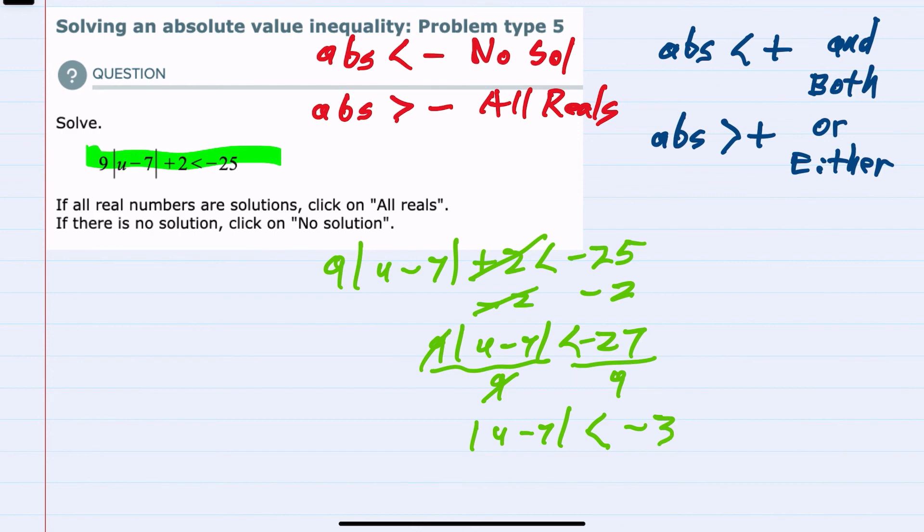So we have the absolute value less than a negative. We said previously that that is no solution, because an absolute value is always going to be positive. It can't be less than a negative. At this point, we don't need to continue. We can stop and just say that there is no solution.